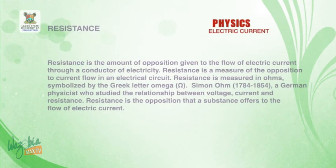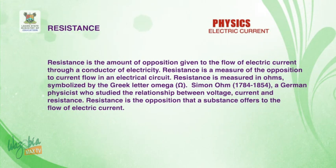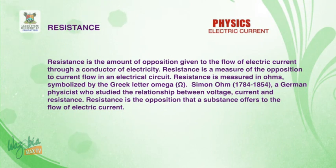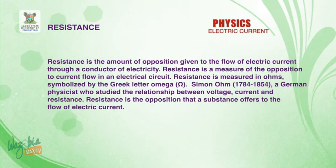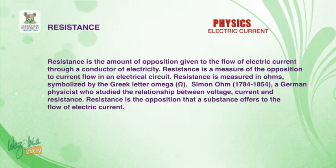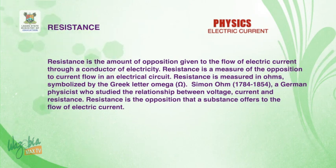Welcome back. When we are looking at resistance, we say that resistance is the amount of opposition given to the flow of electric current through a conductor. We can also say resistance is a measure of the opposition to current flow in an electric circuit. The amount of opposition to electric charge flowing in the conductor is what we regard as resistance. Resistance is measured in ohms, symbolized by the Greek letter omega (Ω). Georg Simon Ohm, a German physicist, studied the relationship between voltage, current, and resistance.